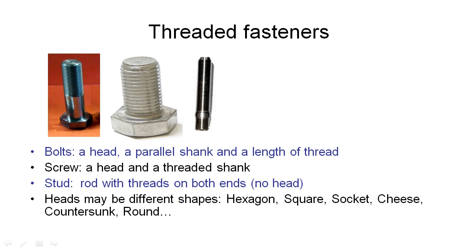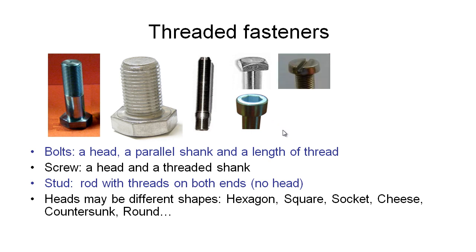The heads on our bolts and screws may be many different shapes. Most common is the hexagon, but we can also have square shapes, socket heads, cheese heads, countersunk, or round. A socket head is tightened using an allen key — there are different types including allen and torx. A cheese head is shaped like a big wheel of cheese, with a single slot across the top for a flat screwdriver.